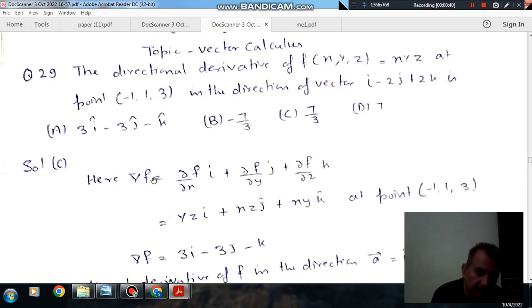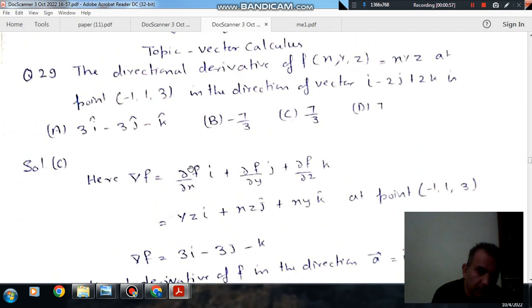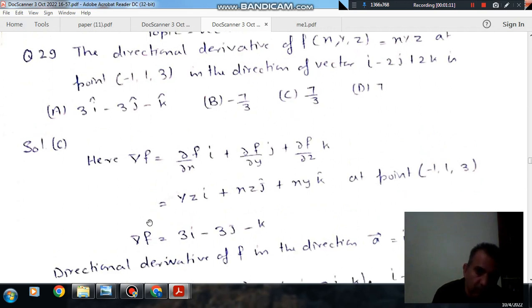So, first finding out del f to find the directional derivative. Del f is ∂f/∂x i + ∂f/∂y j + ∂f/∂z k. The derivative of f with respect to x is yz, derivative of f with respect to y is xz, and derivative of f with respect to z is xy.